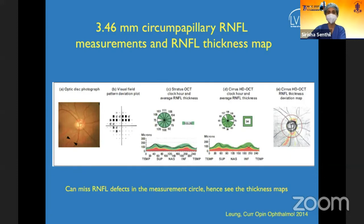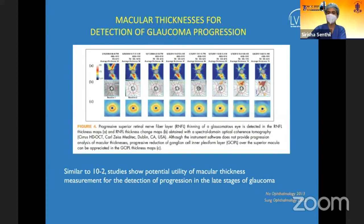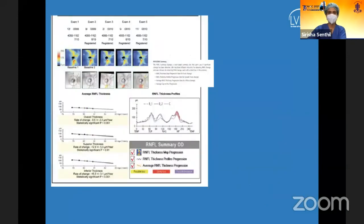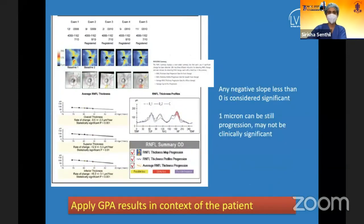Examine thickness maps carefully before concluding there is no progression. Macular GCC progression analysis is also available. Always apply OCT results in the context of the patient — a negative slope may be statistically present but not clinically significant.